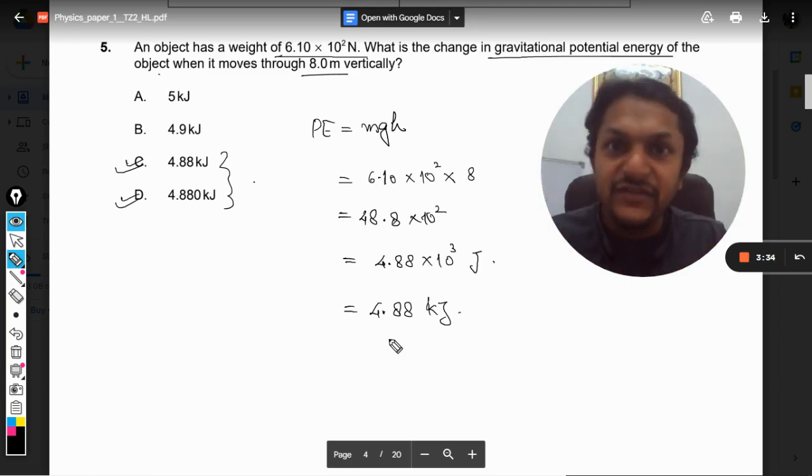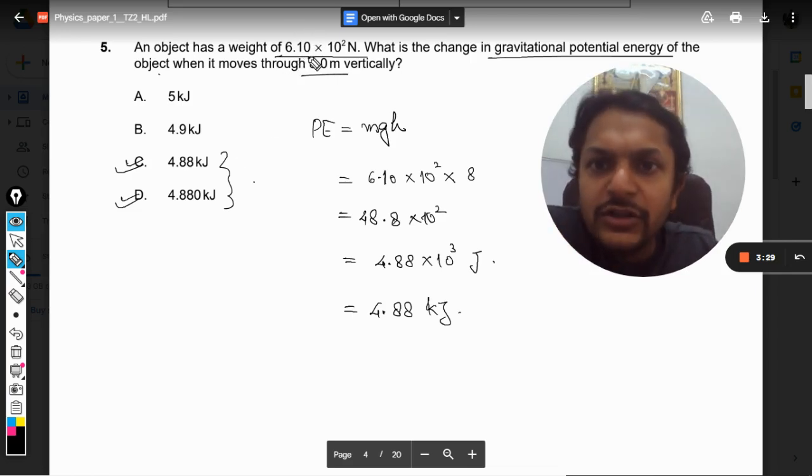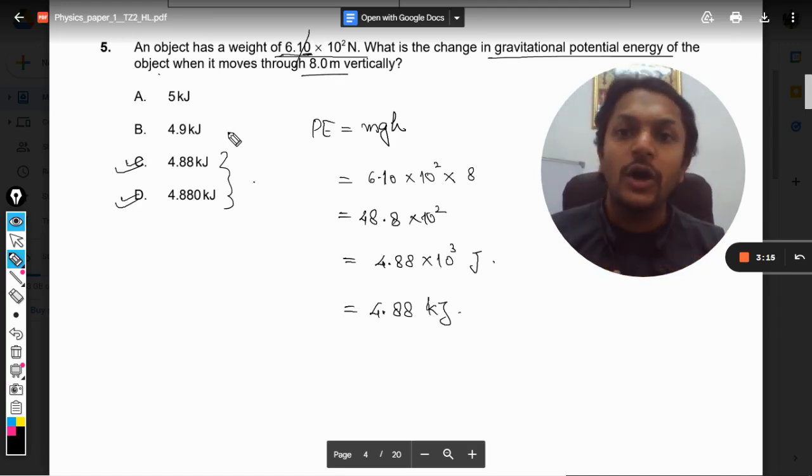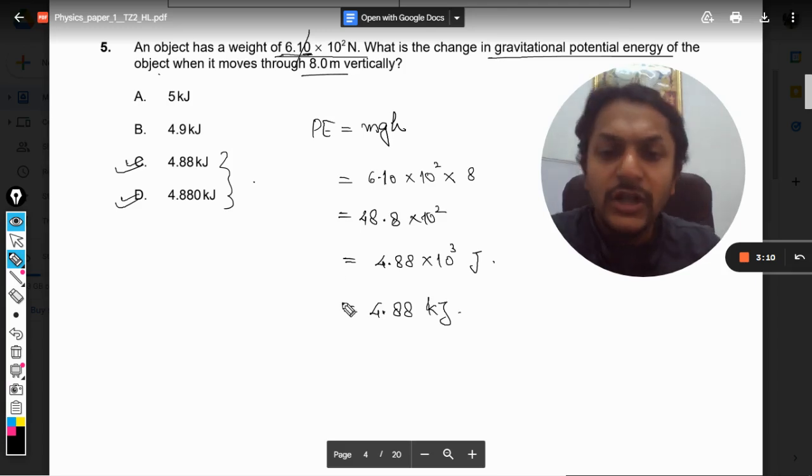So we have to see what are the minimum number of significant figures given in the data. Now if we concentrate on this value of the weight, it is 6.10, and this zero is not accounted as a significant figure. So there are two significant figures that we have here.